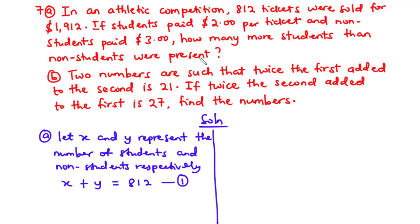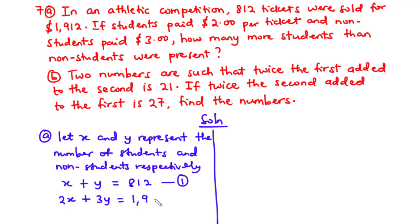We are also told that the total number of tickets sold amounts to $1,912. This means the price per ticket for a student, which is $2, times the number of students present, plus the price per ticket for non-students, which is $3, times the number of non-students present, is equal to $1,912. Let's call this Equation 2.